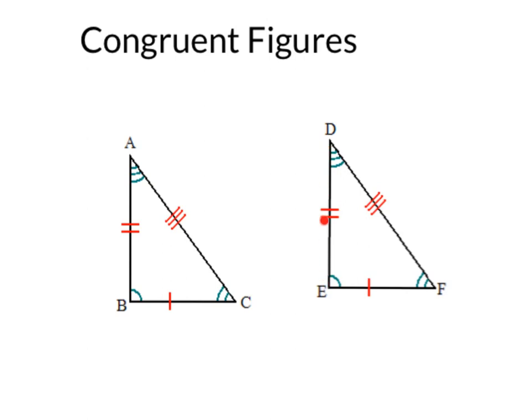Same thing with DE. This two hash mark one is congruent or equal to this AB two hash mark one. Exactly the same thing for three hash marks, DF and AC.